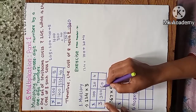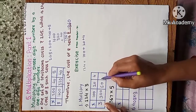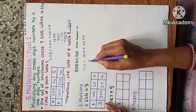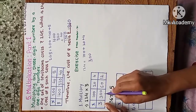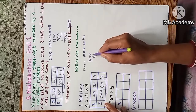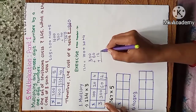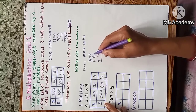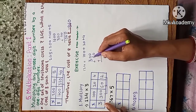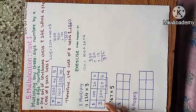3 twos are 60, and 3 fours are 12. Now we add all this: 300 plus 60 plus 12. 0 plus 0 plus 2 is 2, 0 plus 6 plus 1 is 7, and 3. The answer is 372.